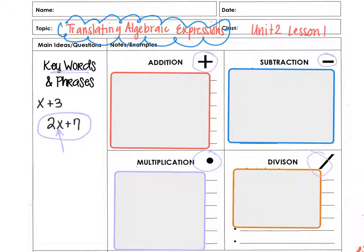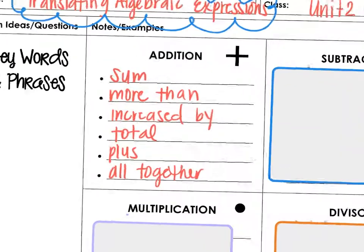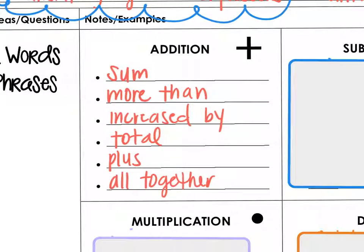Let's take a look at some of those key words. For addition, we have words like sum or more than, or increased by, total, plus, altogether. All of those words are indicators that you should be adding together. So a number more than 5 would be addition.